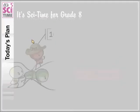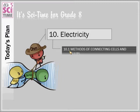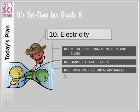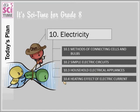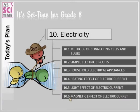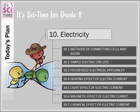Let's see the plan of the electricity lesson. There are many sub-chapters: 10.1 methods of connecting cells and bulbs, simple electric circuits, household electric appliances, heating effect of electric current, light effect, magnetic effect, and chemical effect. That part we have completed. Now we move to 10.2, simple electric circuits, which we must complete today.